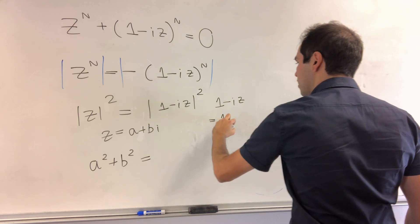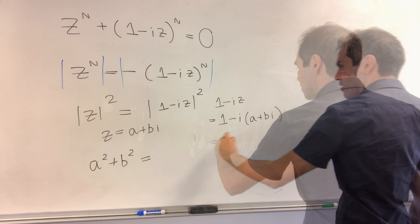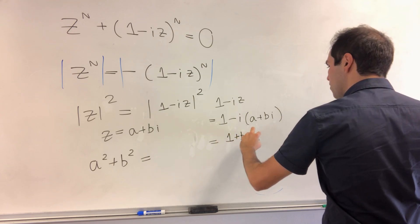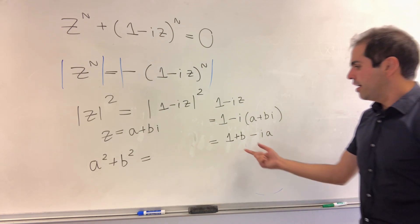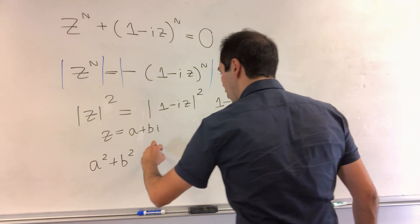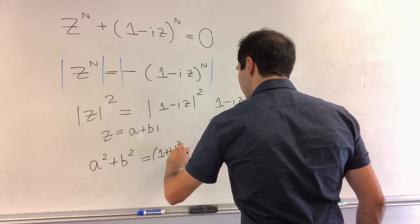Well, that is 1 minus i, a plus bi. So 1 plus b minus i, a. And then what is the absolute value squared? So it's 1 plus b squared plus a squared.